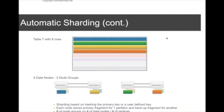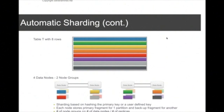The fourth row is stored on data node four with a copy on data node three. Overall, MySQL Cluster distributes the table as evenly as possible across available data nodes. Half the table is located within one node group and the other half in the other node group. You have redundancy because each row has a copy on another data node, and this allows applications to scale because write requests will be directed to the correct data nodes for where that row resides.